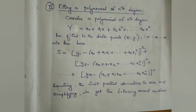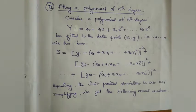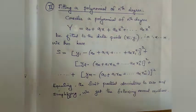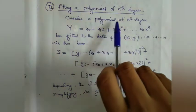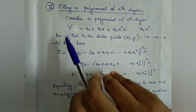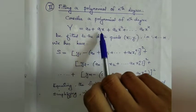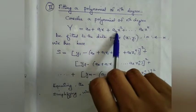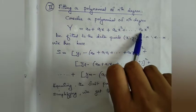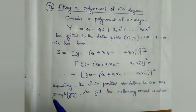In the last session, we studied the procedure of fitting a straight line. Today we are discussing the procedure of fitting a polynomial of nth degree through the given data points. Consider a polynomial of nth degree which is of the form y equals a0 plus a1x plus a2x squared, and so on up to an x raised to n.